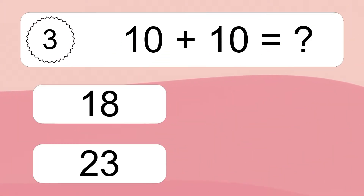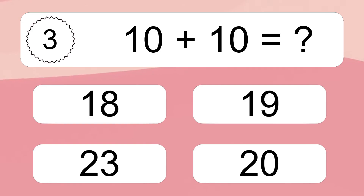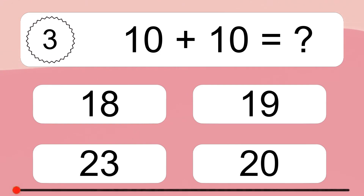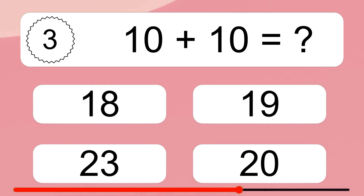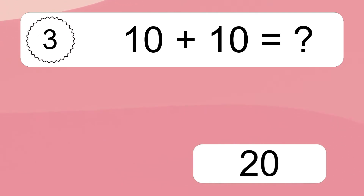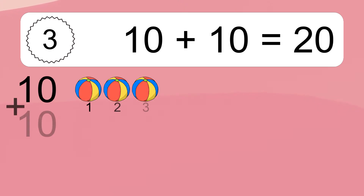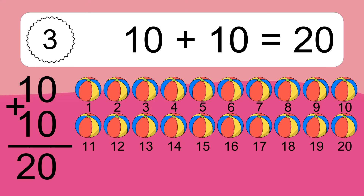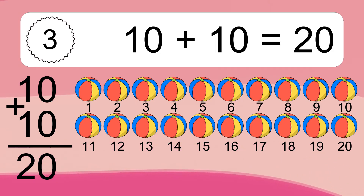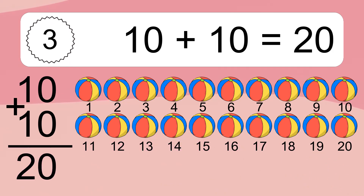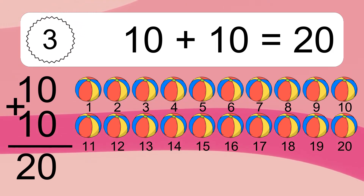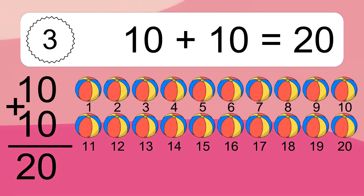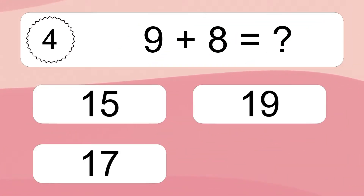10 plus 10 equals what? 10 plus 10 equals 20. Let's count it: 1, 2, 3, 4, 5, 6, 7, 8, 9, 10, 11, 12, 13, 14, 15, 16, 17, 18, 19, 20.